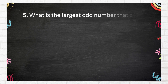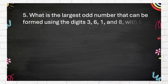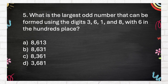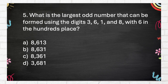Question number 5. What is the largest odd number that can be formed using the digits 3, 6, 1, and 8, with 6 in the hundreds place? A. 8,613, B. 8,631, C. 8,361, D. 3,681.